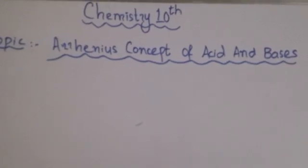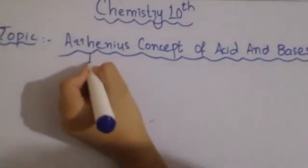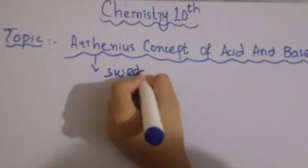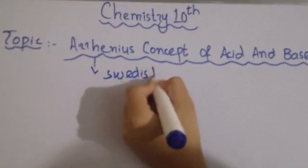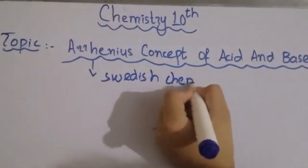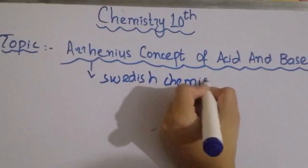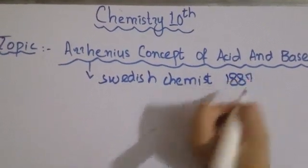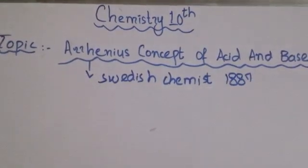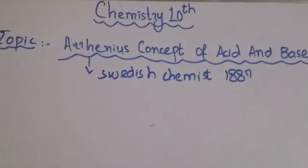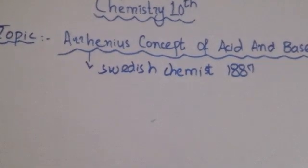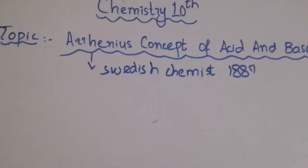Arrhenius was a Swedish chemist. He proposed a theory in 1877 and it was successful. He proposed the theory of acid and base.